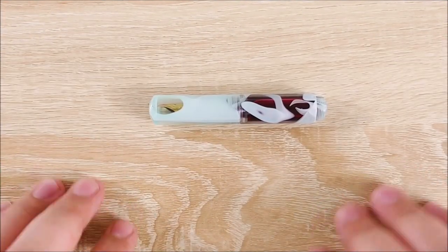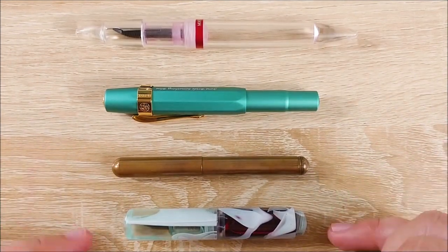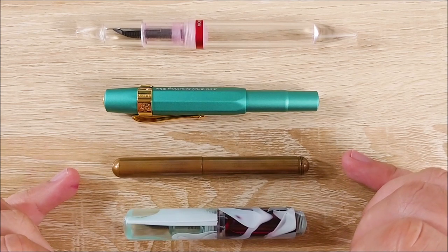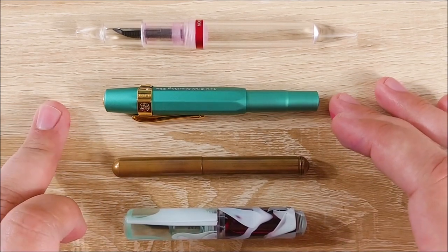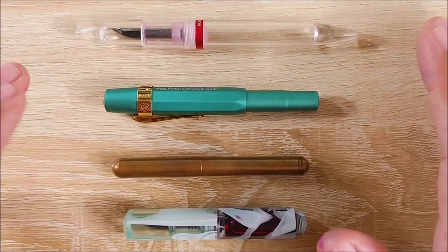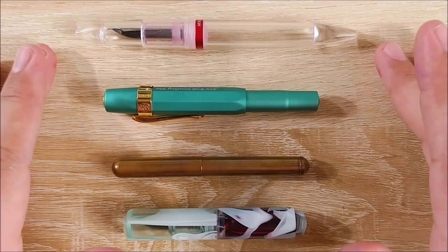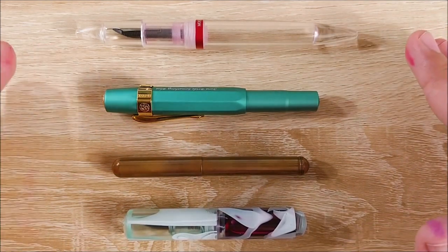Let's go ahead and go on to the size comparisons first. So here it is closed, capped. At the bottom we have the Wankai. Right above that we have the Kaweco Lilliput, and then the Kaweco Sport, and then at the top we have the Moonman M2. I was going to include the Pilot Metropolitan, but it's roughly the same size as the M2.